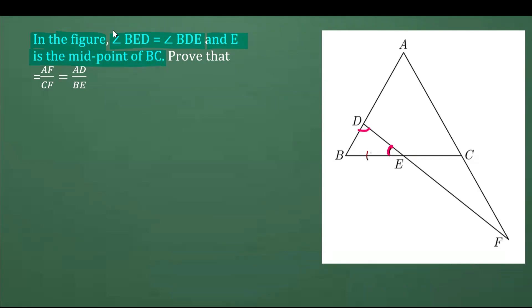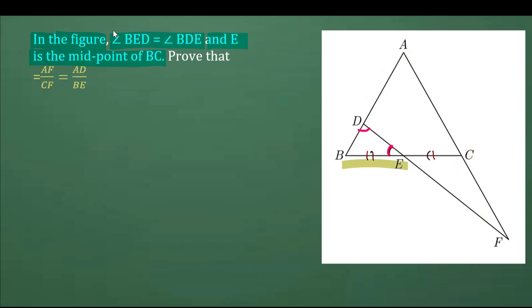Since E is the midpoint, BE is equal to EC. Now what we need to prove is the ratio AF over CF is equal to AD over BE. This is AF, CF, AD, and BE.